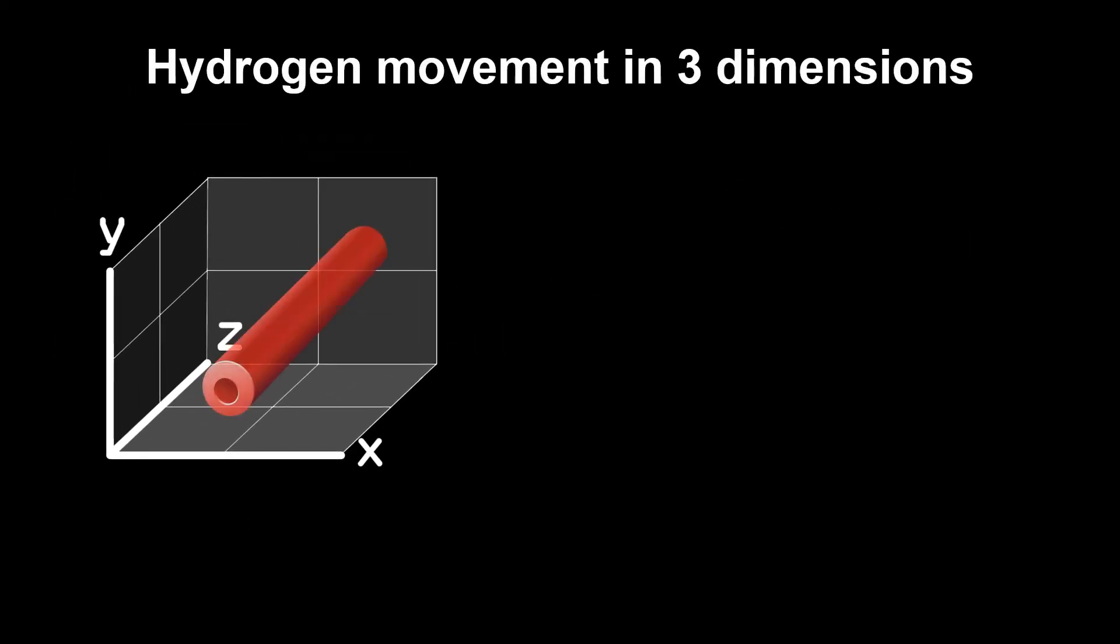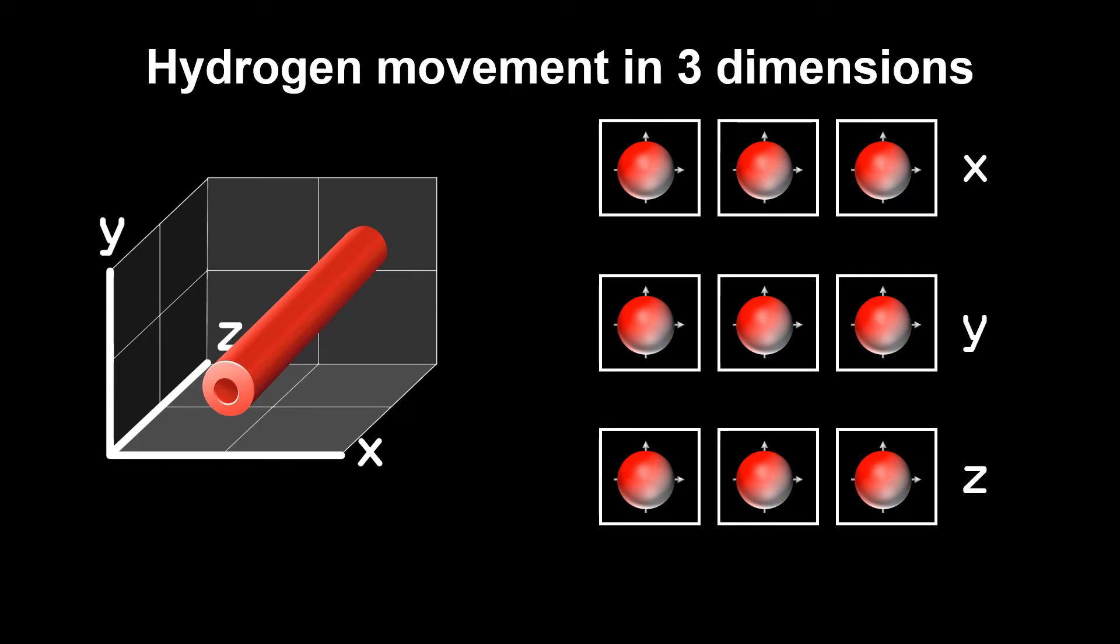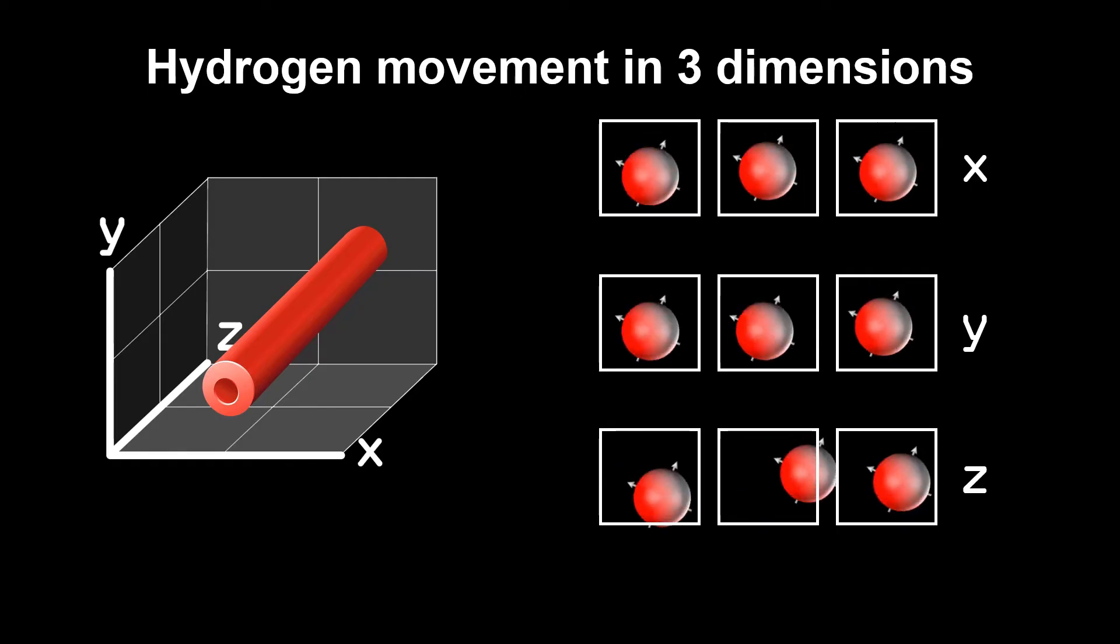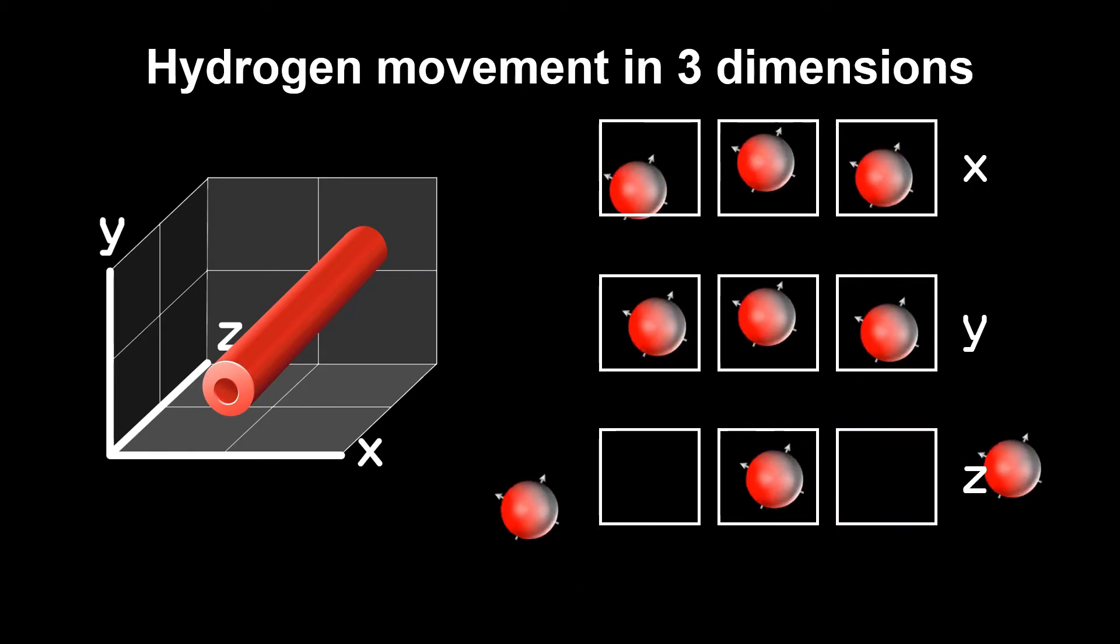Let's look at an example where the axon follows the z-direction of the 3D space. In the x- and y-direction, there is not a lot of hydrogen movement going on, but in the z-direction there is.